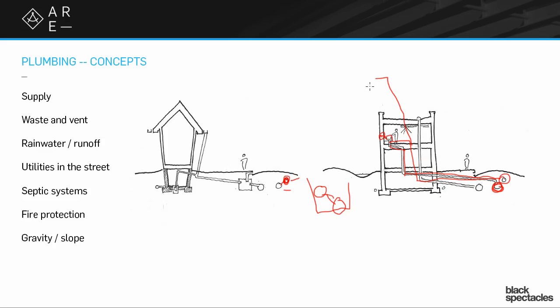So the supply pipes are very different from the waste pipes. Supply pipes tend to be much smaller because they're pressurized. The waste pipes tend to be much larger because you don't want them to clog. They have all kinds of other stuff in there. So the size of the pipes is different. The sloping and the pressure is different. All of those things will start to play out in many different ways on the drawings and in the buildings themselves.